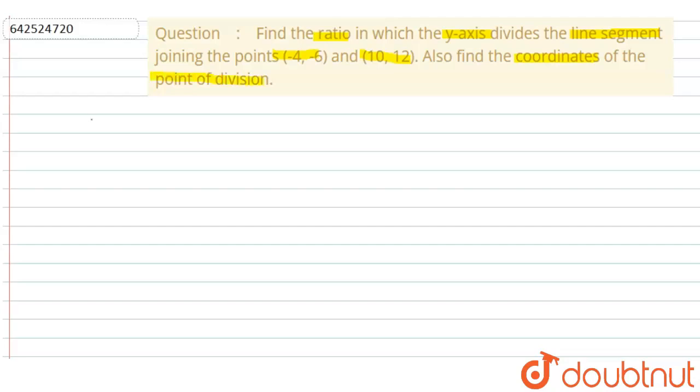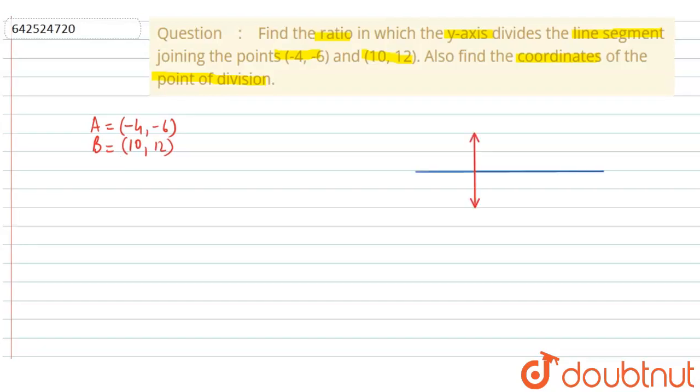So we are given two points. Let's name them A as (-4, -6) and B as (10, 12) forming up line segment. So let this be the line segment AB.